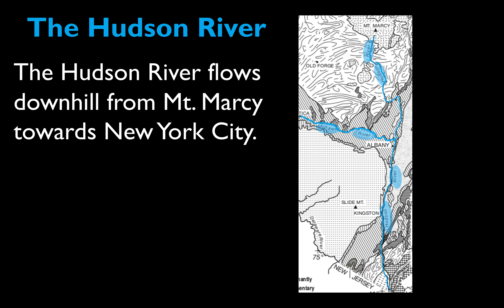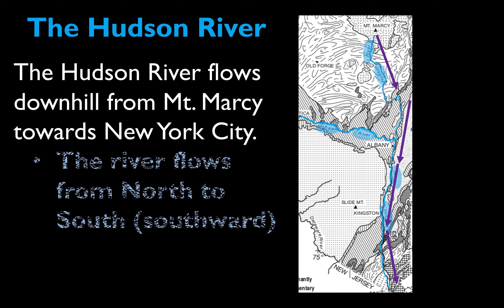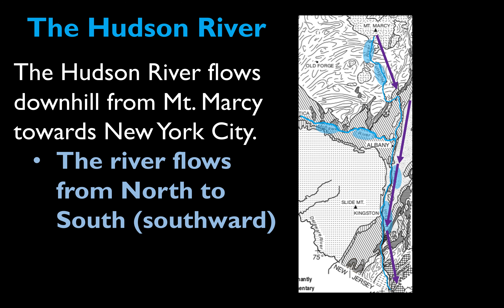Another example is the Hudson River. The Hudson River starts near Mount Marcy in the Adirondack Mountain region and flows downhill towards New York City. This river actually does flow from north to south — in the southward direction — because it flows from the high elevation starting in the mountains towards lower elevation in New York City.